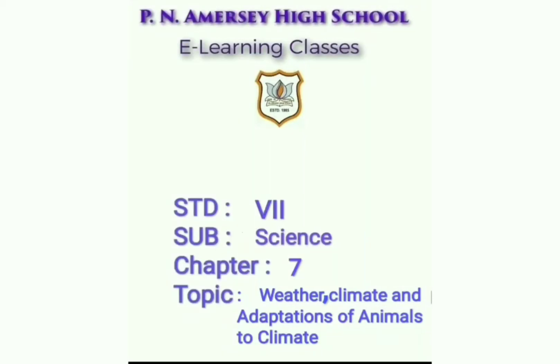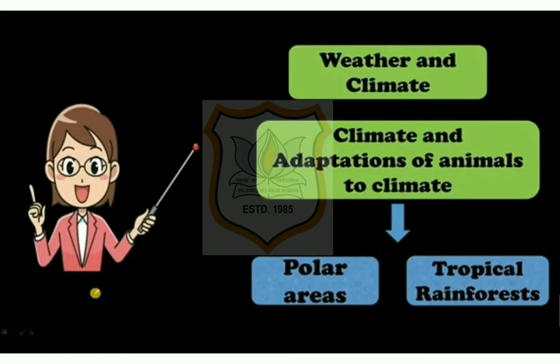Hello students. Today we are going to start chapter 7th of science of class 7th, that is weather, climate and adaptation of animals to climate. In this chapter we will study about weather and climate. We will also see how different forms of life are adapted to the climate of their habitat, including polar areas and tropical rainforests.